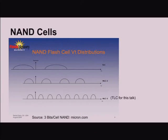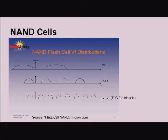For MLC, you have to program the low page first, which programs it approximately to the top distribution. Then based on what the second bit is, it takes the erase state and moves it to one of two positions depending on whether it's one-one or one-zero, and similarly moves other states for zero-zero or zero-one for the second bit.